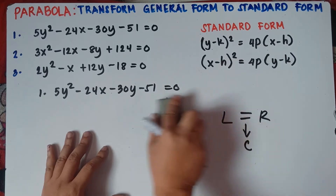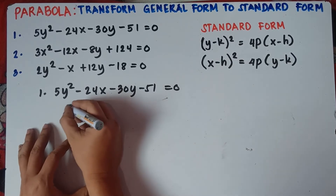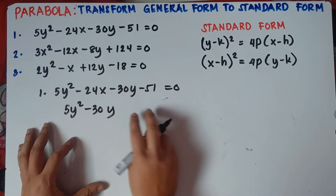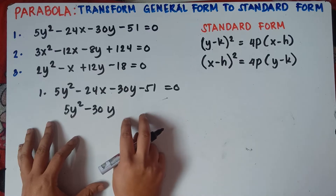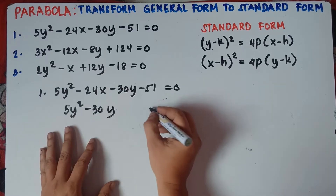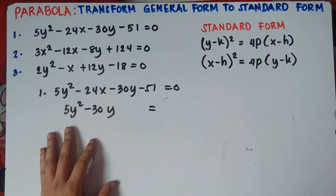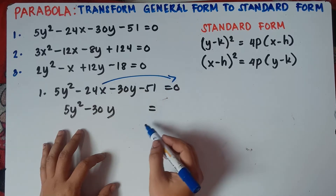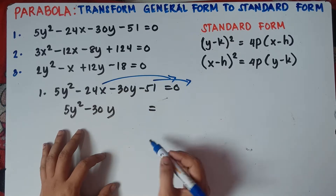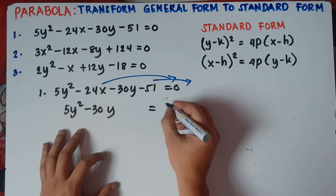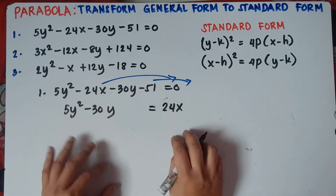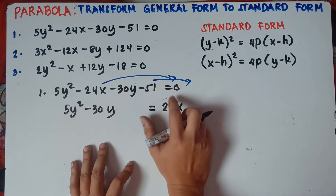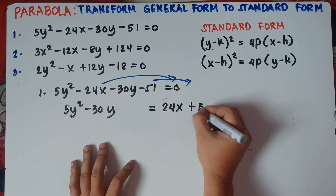We copy 5y squared and negative 30y on the left, and put a space because we need to do completing the square. Then we transpose: negative 24x goes to the right and becomes positive 24x, and negative 51 becomes positive 51. Do not forget — once you transfer a term across the equal sign, you always change the sign.